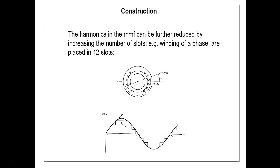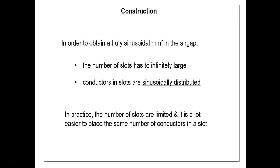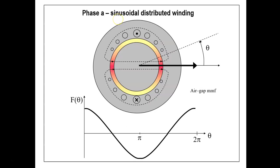In practice, a true sinusoidal MMF cannot be achieved because there is always a finite number of slots per pole. To get an MMF wave even closer to sinusoidal, the number of conductors in each slot must be sinusoidally distributed — though in practice it is much easier to place the same number of conductors in each slot. The ideal scenario is to have an infinite number of slots per pole to produce a stepless change in the MMF wave, with conductors sinusoidally distributed as shown in the diagram.